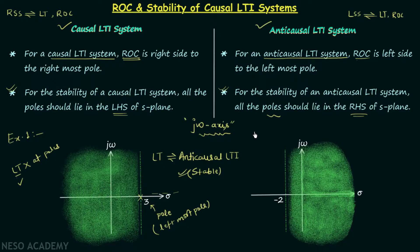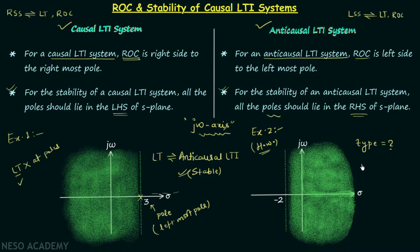Now we move to example number 2. Again we have a region of convergence represented by the green shaded portion, and I will give this example as a homework problem. You need to determine whether the system is causal or anticausal, and whether it is stable or unstable. Try to solve example number 2 and post your answer in the comment section. I will end this lecture here — see you in the next one.